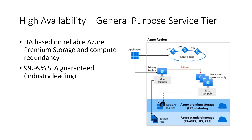Now let's take a look at the High Availability design for the General Purpose service tier. Using the diagram on the right-hand side: at the bottom, we have the Storage layer, which is based on Azure Premium page blobs. We're using an Azure Premium Storage account for data and log files, and an Azure Standard Storage account for backup files. Then there's the Compute layer in the middle. In the General Purpose service tier, it's based on a single Compute VM hosting the primary replica of the managed instance, and a set of nodes with spare capacity in the same virtual cluster.